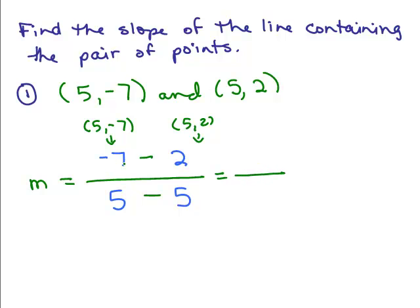So let's see, what do I have here? Negative 7 minus 2 is negative 9 and 5 minus 5 is 0. Uh-oh, what happens when you have a 0 in the denominator that's not equal to 0? That means the slope is undefined.